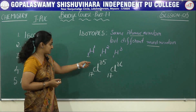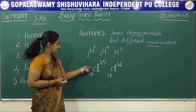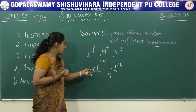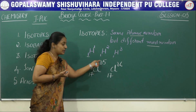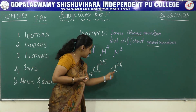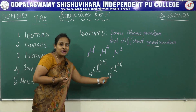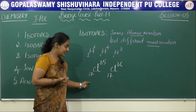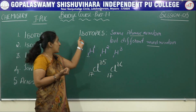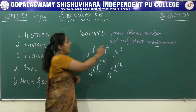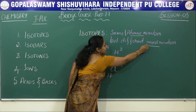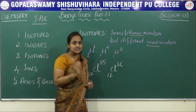Another example is chlorine. It exists in two different isotopic forms: chlorine-35 with atomic number 17, and chlorine-37 with atomic number 17. Here the atomic number remains the same but the mass number is changing. Therefore, isotopes are species having the same atomic number but different mass number.